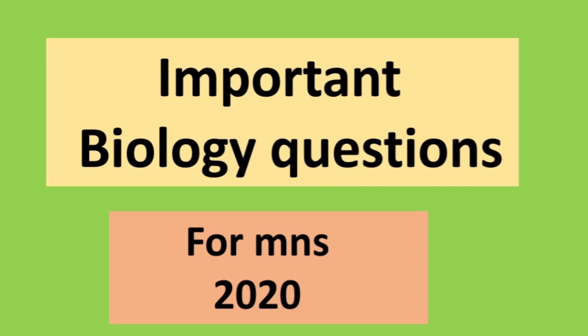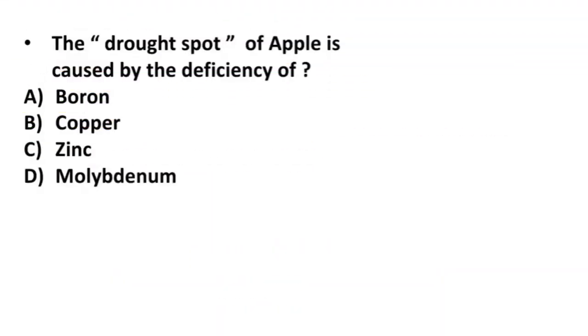Our first question is: the drought spot of apple is caused by the deficiency of boron, copper, zinc, or molybdenum? Its correct answer is option A, boron. So the drought spot of apple is caused by the deficiency of boron.